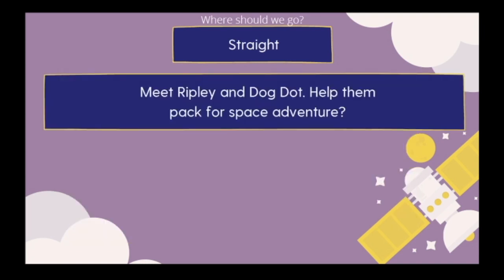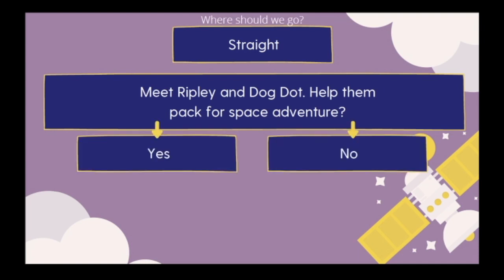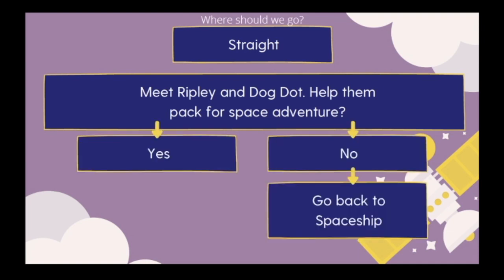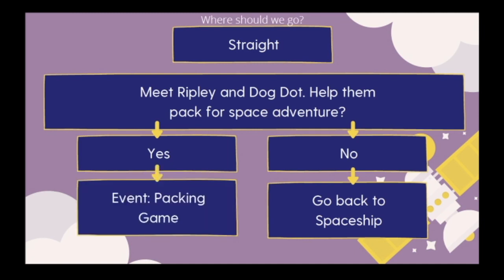If we decide to go straight, we're going to meet Ripley and his dog Dot, and he's going to ask us to help them pack for a space adventure. You can answer yes or no. If you answer no, we go back to the spaceship and pick another option. If we say yes, we start a new event called the packing game. Once we help Ripley and Dot pack all their things, we finish and go back to the spaceship.